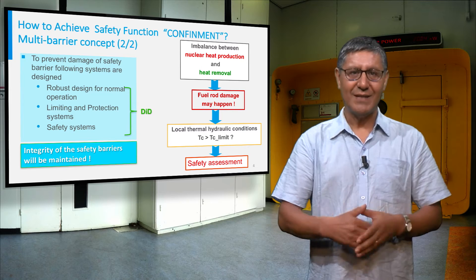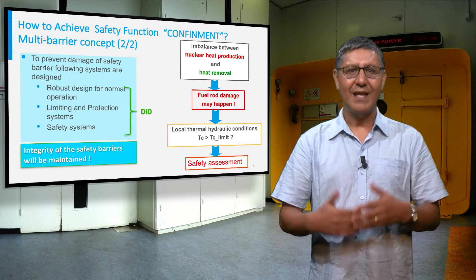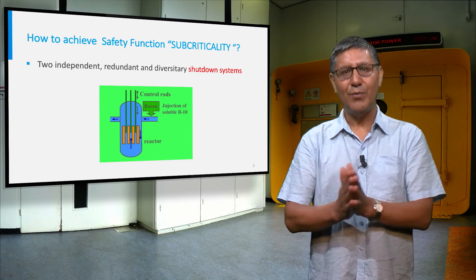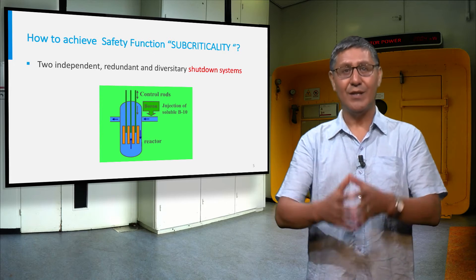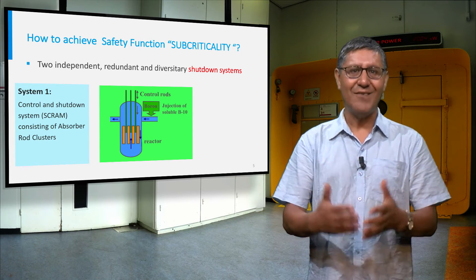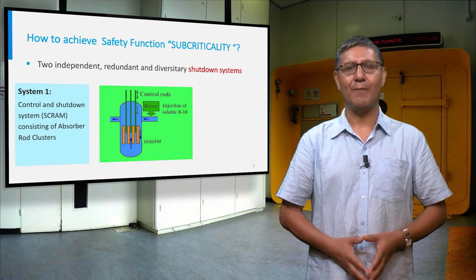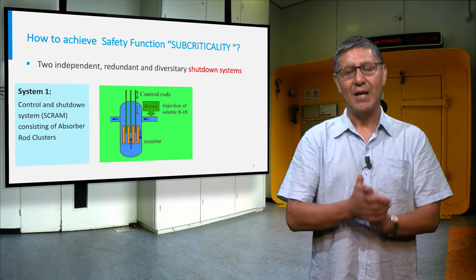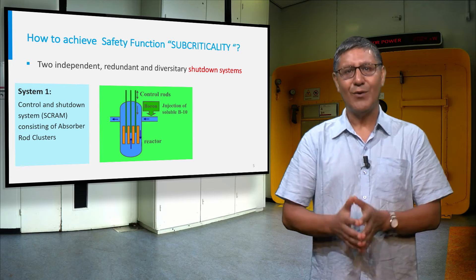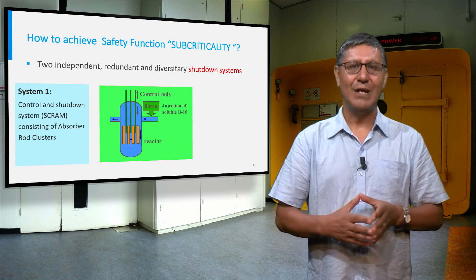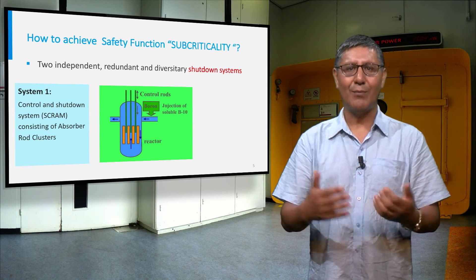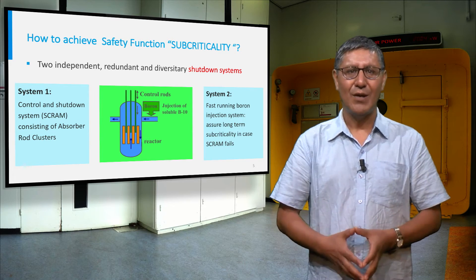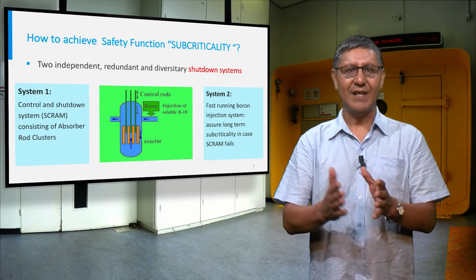Safety assessments are required to investigate the effects of these imbalances. To ensure the reactor can be brought to a subcritical state at all times, two independent, redundant, and diverse shutdown systems are required. One system consists of control rods made of strong neutron-absorbing materials such as boron carbide. The second system consists of a boric acid injection system, which ensures subcriticality if a scram fails.